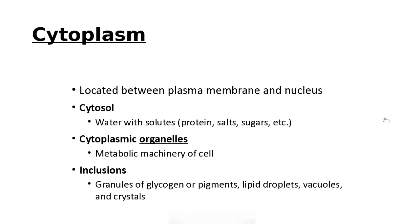The cytoplasm is located between the plasma membrane and the nucleus. It contains a cytosol, which is the watery stuff that makes up the cell, with lots of solutes — sugar, salts, proteins. It also contains cytoplasmic organelles, which are the metabolic machinery of the cell, and inclusions. These are not actually living structures but little particles wrapped in membranes.